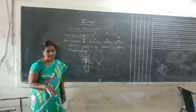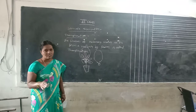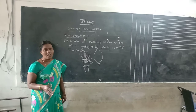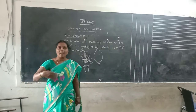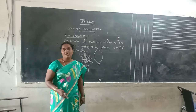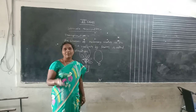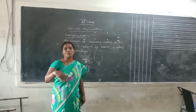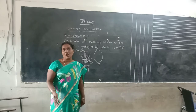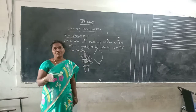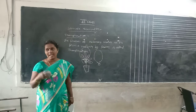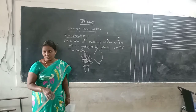The process by which plants prepare their own food is called photosynthesis. Plants are called autotrophs — autotrophs means self-feeders.